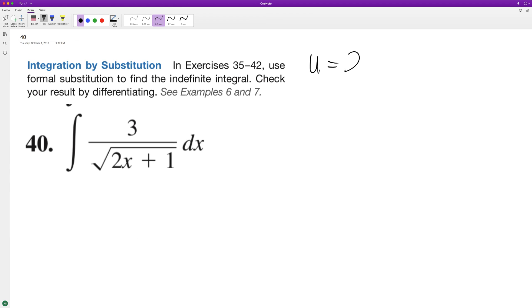So we'll set u equal to 2x plus 1 and du is equal to 2. And to get du equal to dx, we need to multiply it by 3 halves. du is equal to dx.